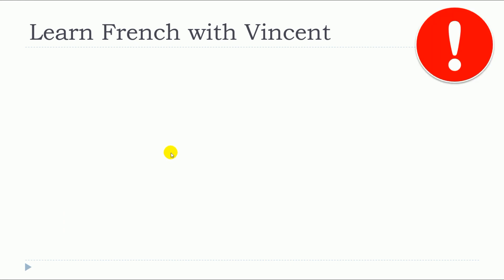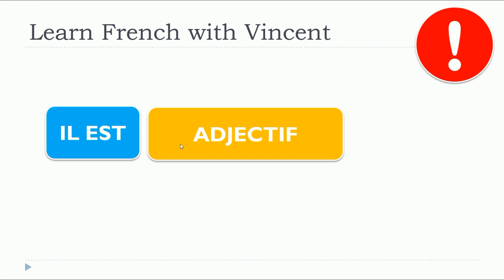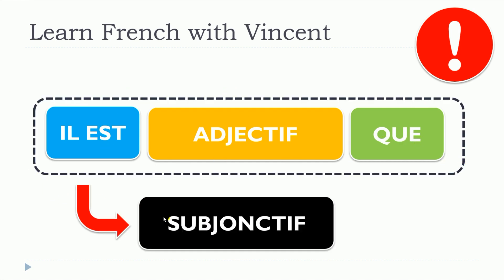The important thing that we need to remember is that we will structure our sentence in such a way. We will start with il est. Remember that in that case, il will stand for it and not for he. Then we will put the adjective, then que, and after all that, we will introduce the subjonctif. So it means that the verbs that will come after this structure will be in the subjonctif.